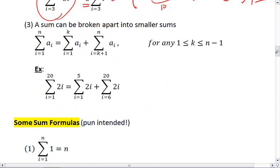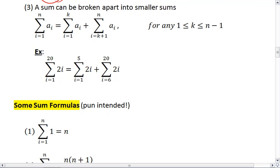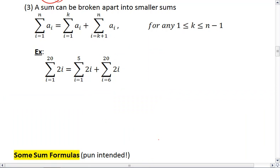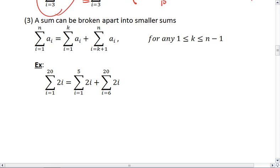All right, our next property. A sum can be broken apart into smaller sums. So if I am taking a sum from i equals 1 to n of ai, I can split apart the sum from 1 to n and pick some number in between. So I pick some number k in between 1 and n. And I can take the sum from 1 to k and then add that to the sum from k plus 1 to n.